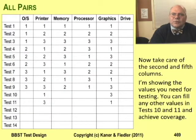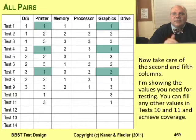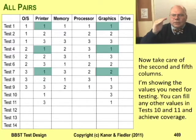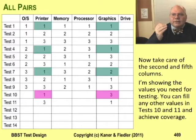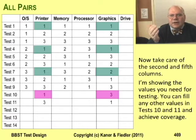Checking printers with graphics is a little less successful. There is a one with a one, another one with a one, and a one with a two, but there's no pair with a printer one and a graphics three. To get that pair, we need another test — I put it into row 10.